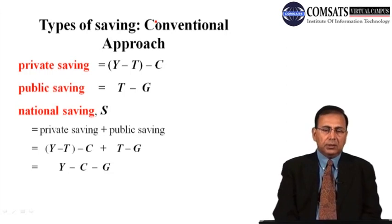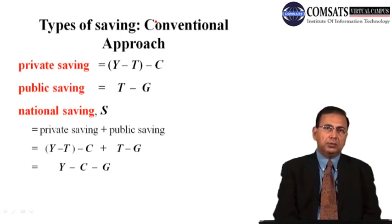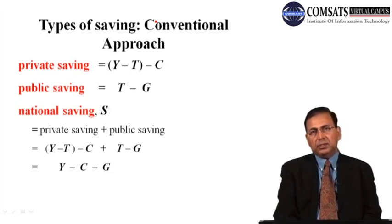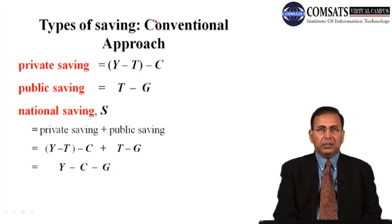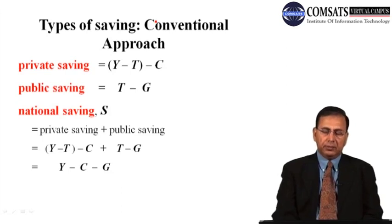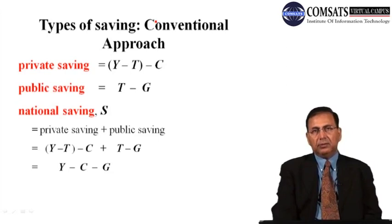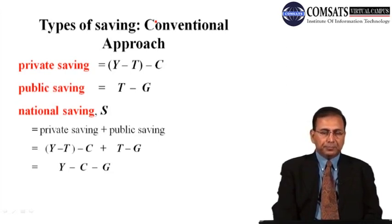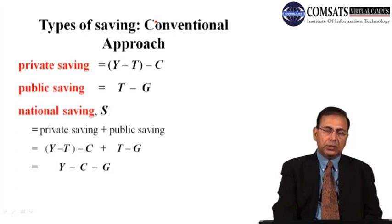When we add private and public saving together, this gives us national saving — the total amount of saving by the nation as a whole. The simplified equation Y minus C minus G results from canceling the T terms. Delta Y minus delta T determines the total change in disposable income. Out of this disposable income, how much is consumed depends on the size of MPC — marginal propensity to consume. If MPC is 0.8, it means 80% of disposable income is consumed and 20% is saved, becoming part of national savings.